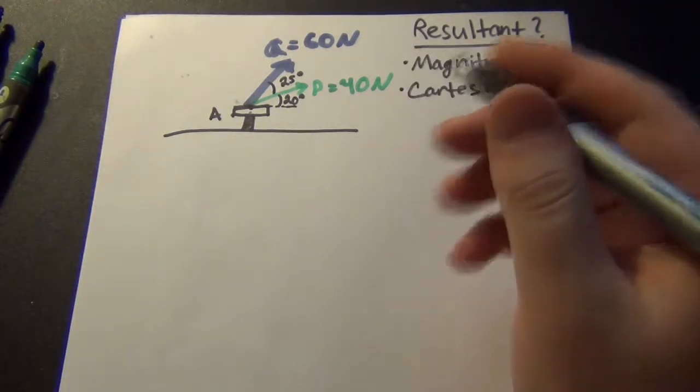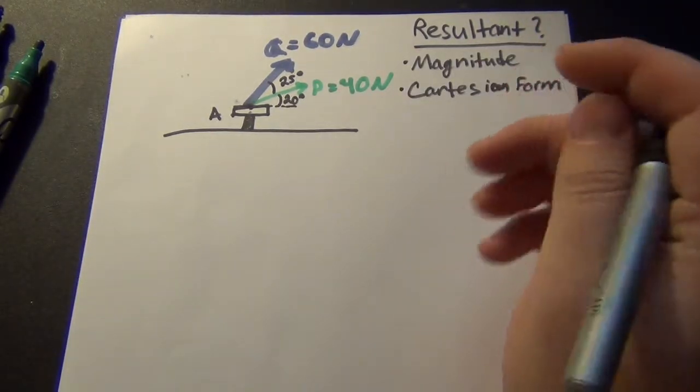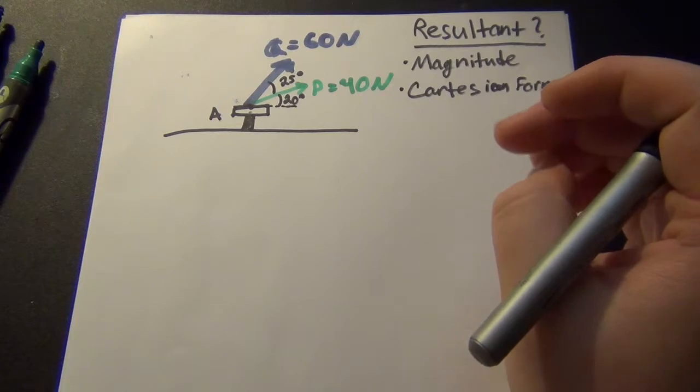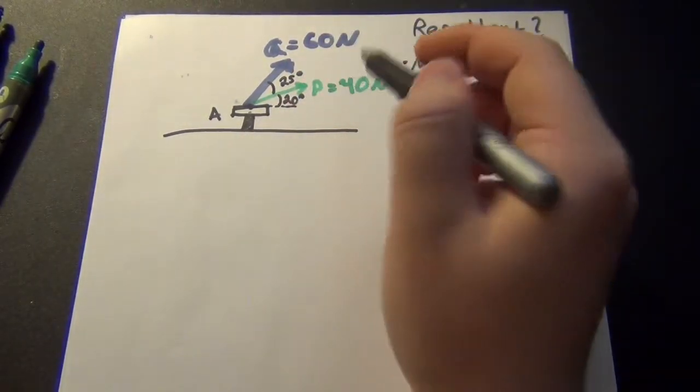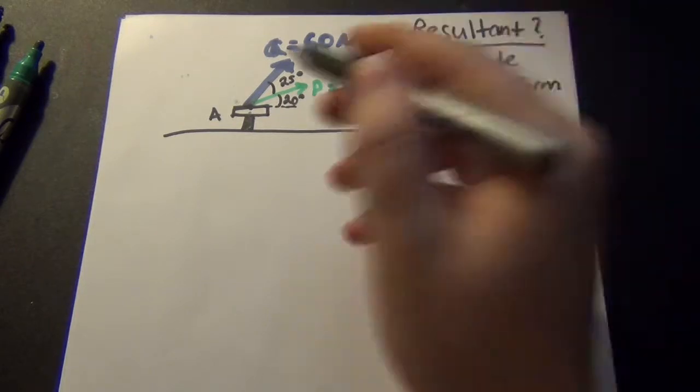And so this is a pretty straightforward example, but I thought I'd go over it very in detail. So what we want to do, we can't just add these forces by saying 60 plus 40 is 100, because they're at different angles.